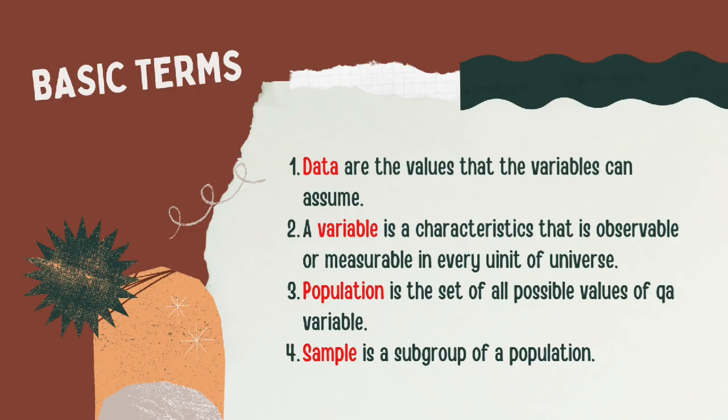And now, we move on to basic terms. Data are the values that the variables can assume. A variable is a characteristic that is observable or measurable in every unit of universe. Then, population is the set of all possible values of a variable. Lastly, sample is a subgroup of a population.